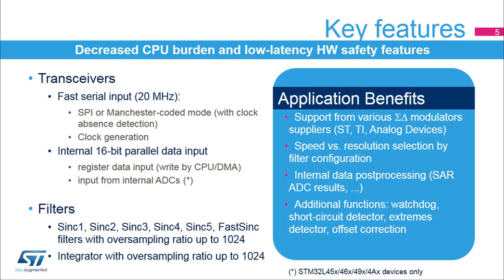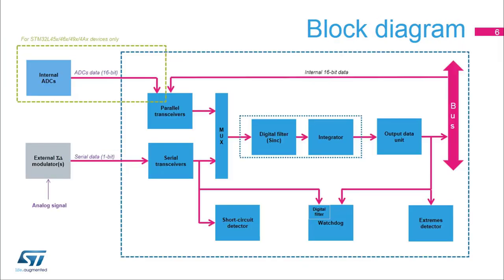The entire digital filter for sigma-delta modulators interface consists of 8 serial transceivers, 4 SINC filter parts and integrators, 4 output data units, 4 analog watchdogs, 8 short circuit detectors, 4 extreme detectors, and 8 parallel data input registers. For STM32L45X, 46X devices, the configuration is only one half: four transceivers and two filters and integrators.